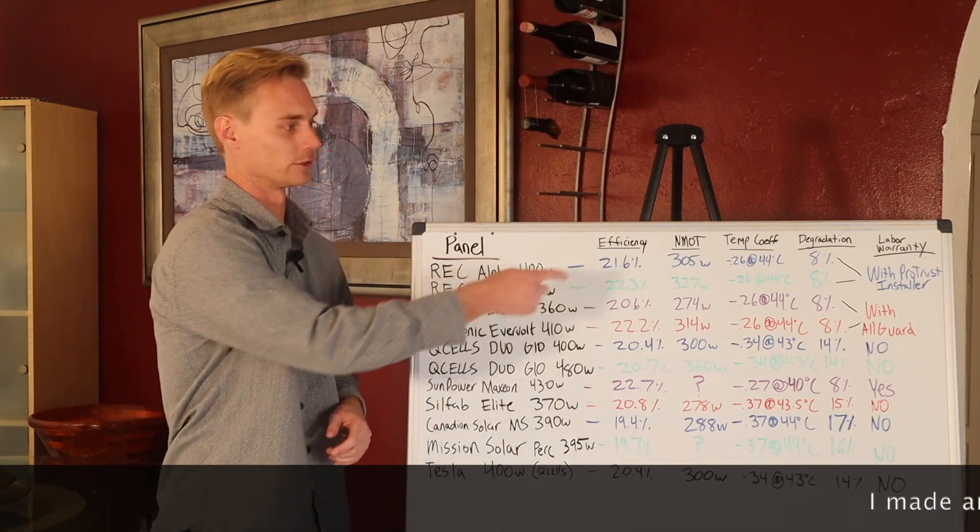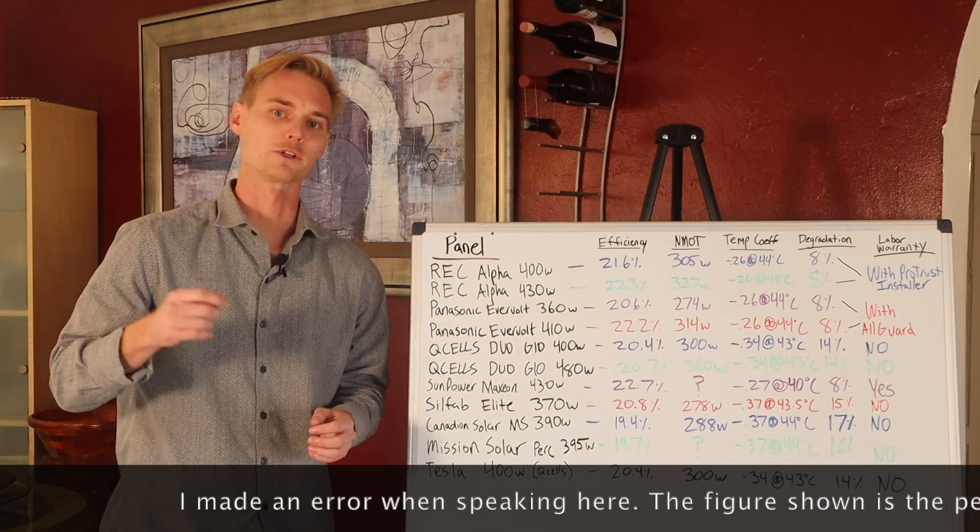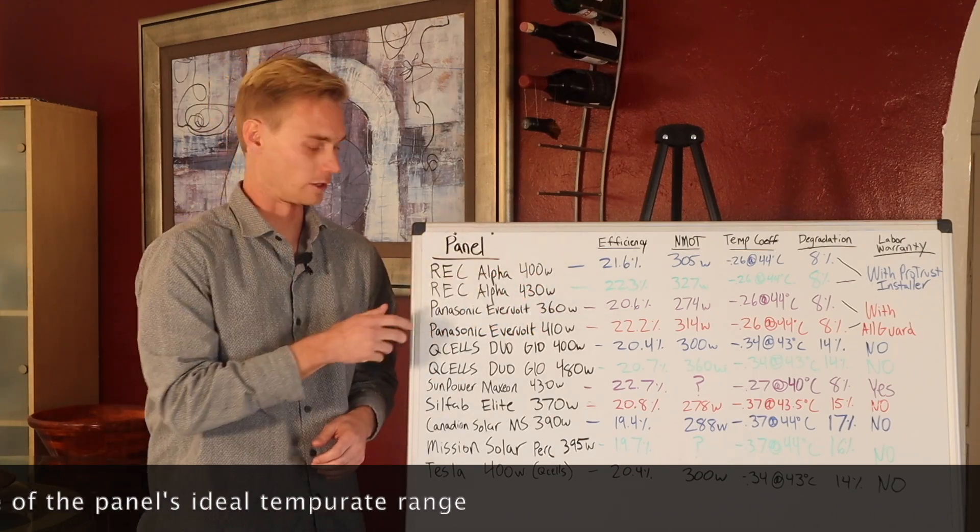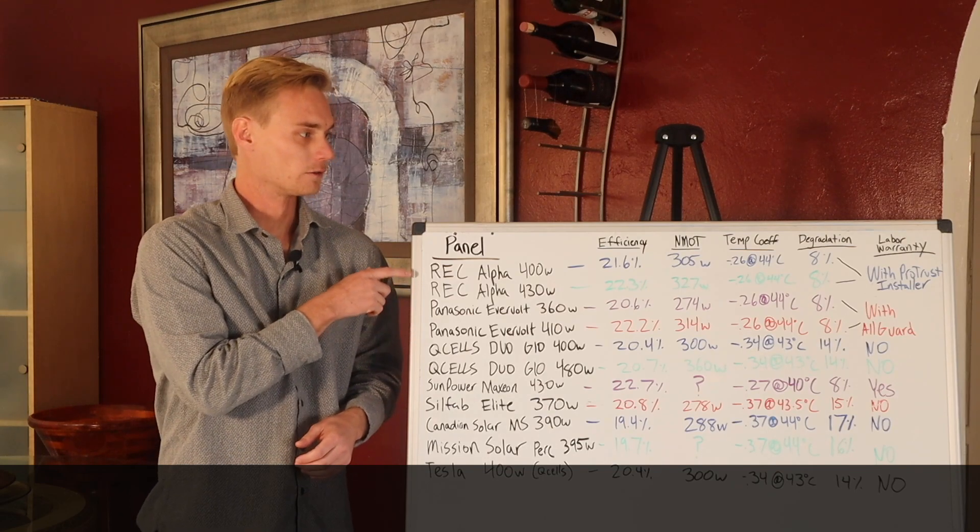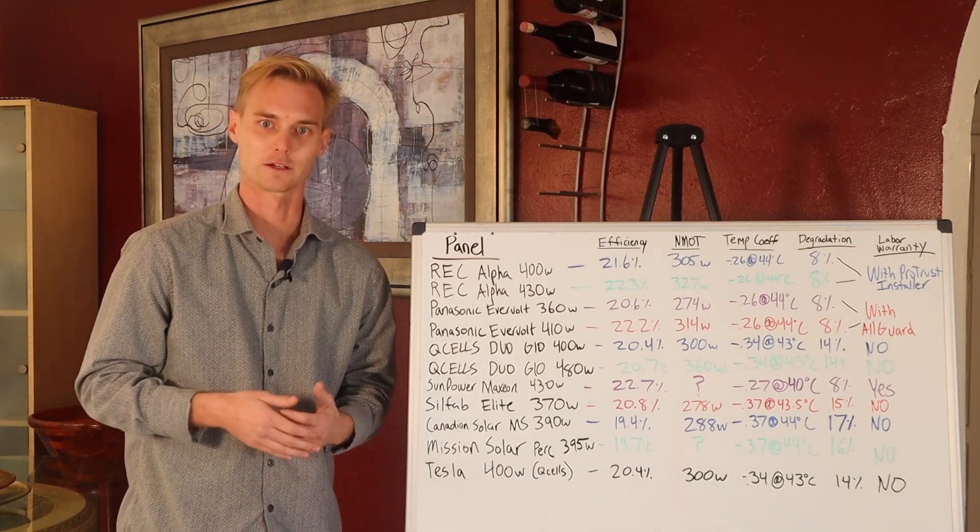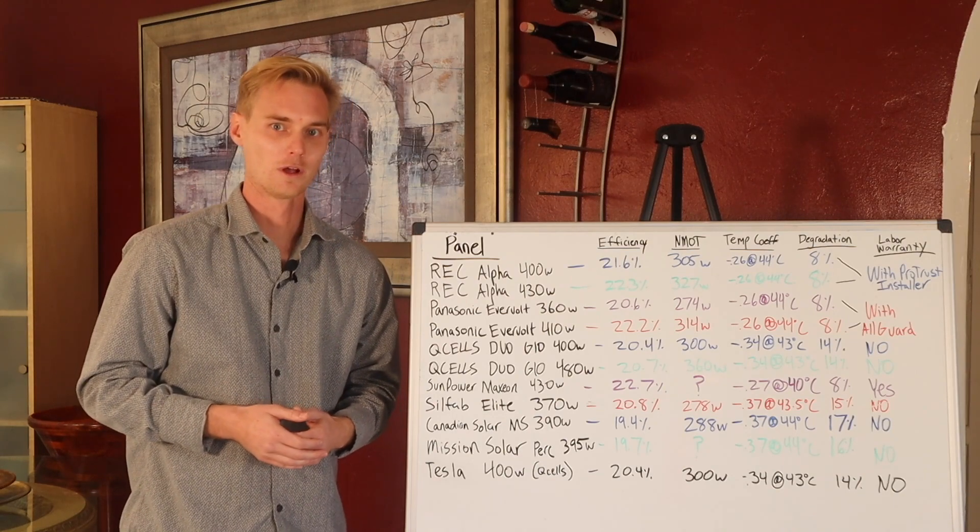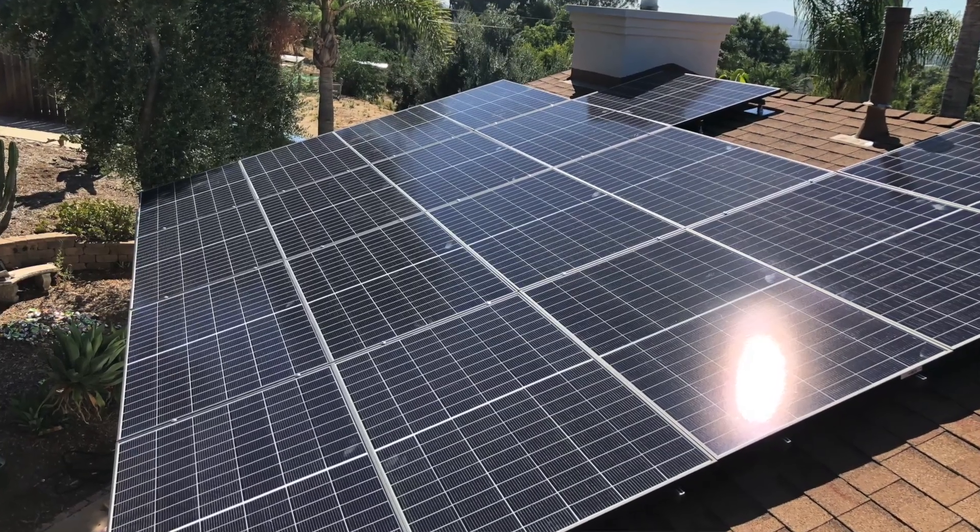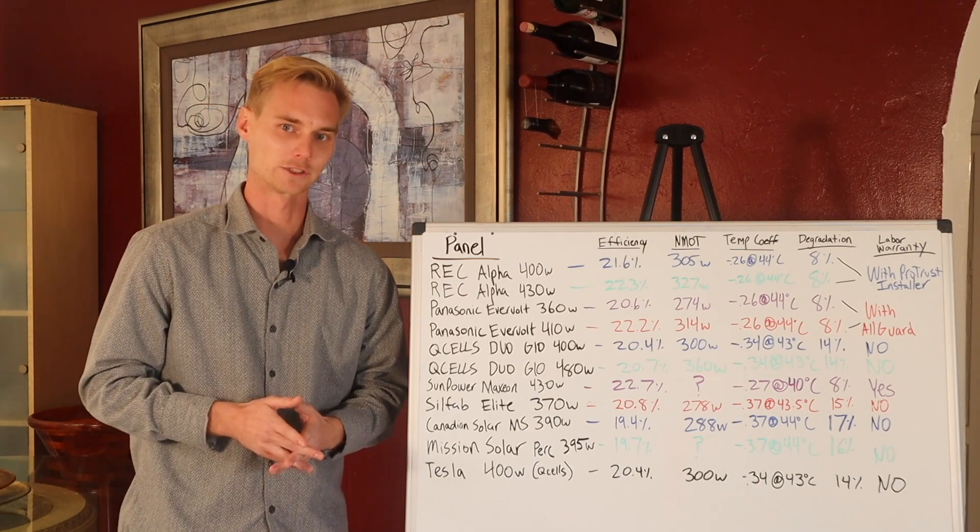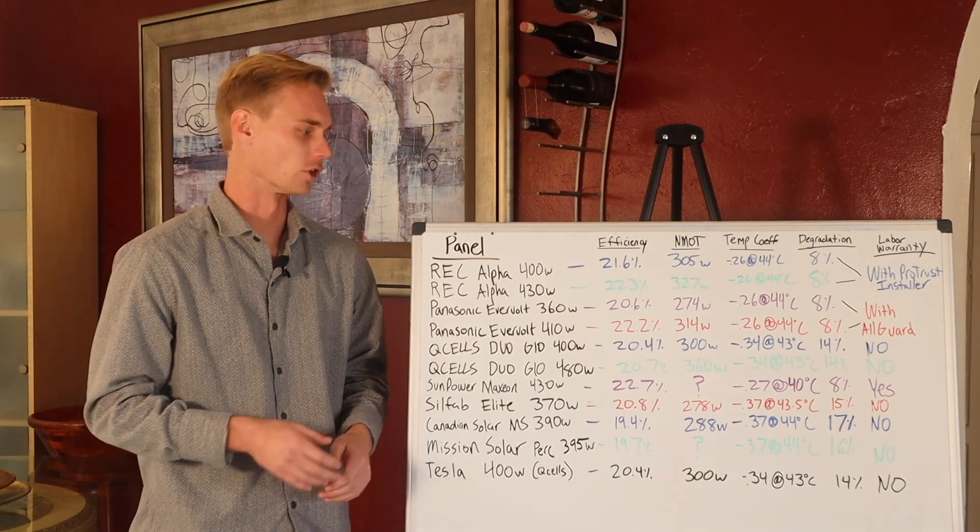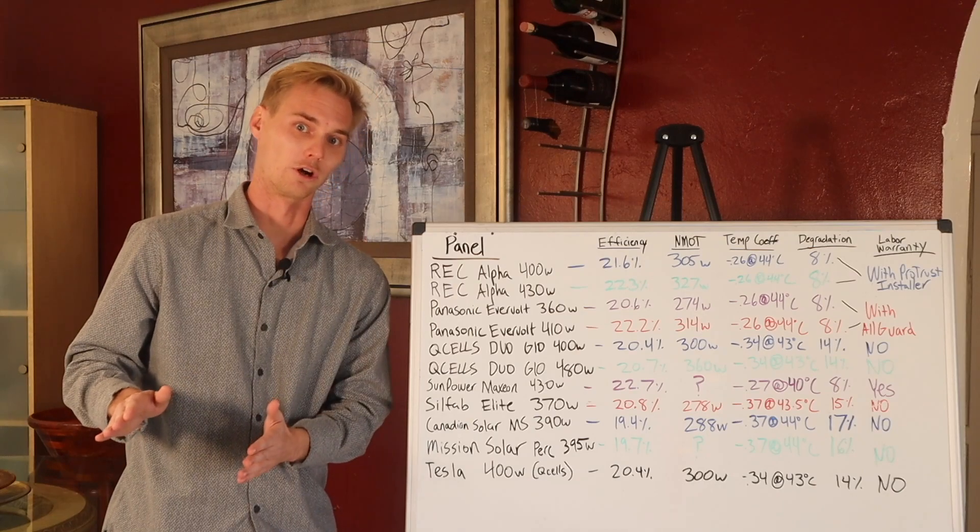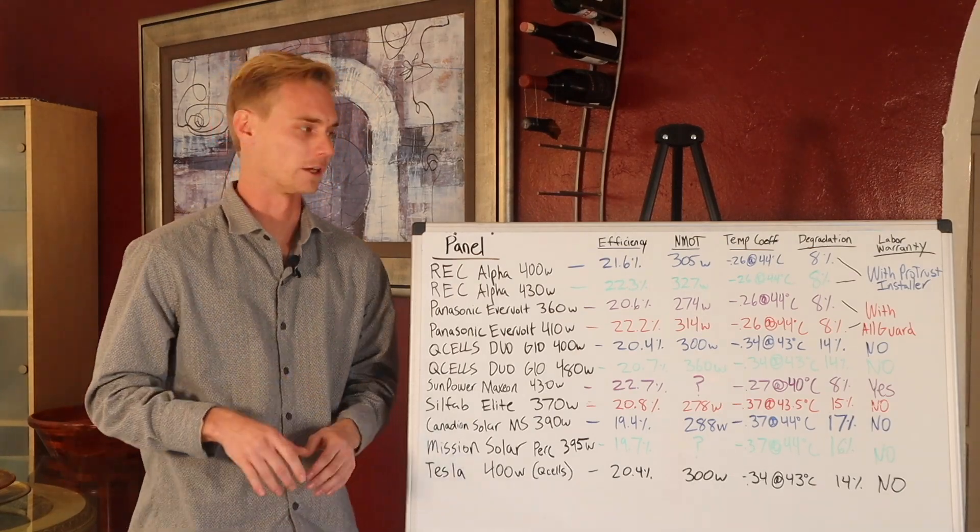Certain panels perform better in the heat. That's a big differentiator for a more premium panel versus a more middle of the road panel. The temperature coefficient tells us for every degree outside of its ideal temperature range, which is usually around 40 to 44 degrees Celsius, there's going to be a percent drop off. The temperature coefficient leader here is REC and Panasonic. A lower temperature coefficient number is better. Higher is not better in this case.